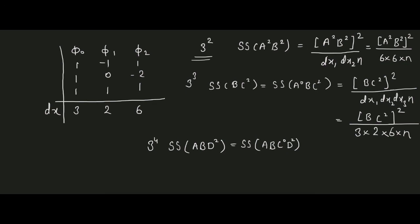Suppose we have a 3² factorial design and want to find the sum of squares for A²B². The formula is the square of the contrast for A²B² divided by dx₁ × dx₂ × n, where n is the number of replicates. To find dx₁, we look at the exponent of A which is 2, so we look into the column of φ₂ and the dx value is 6, so dx₁ = 6. To find dx₂, the exponent of B is also 2, so again dx₂ = 6. Therefore the divisor for A²B² is 6 × 6 × n.